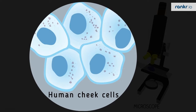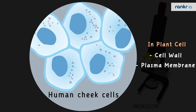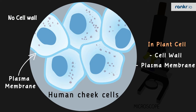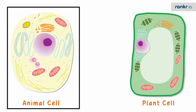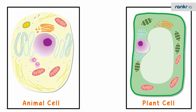Do you remember there are two distinct boundaries around the cell? Yes, the cell wall and the plasma membrane. Notice that we do not have the cell wall around the plasma membrane in the animal cell. How about we compare the animal cell with the plant cell.